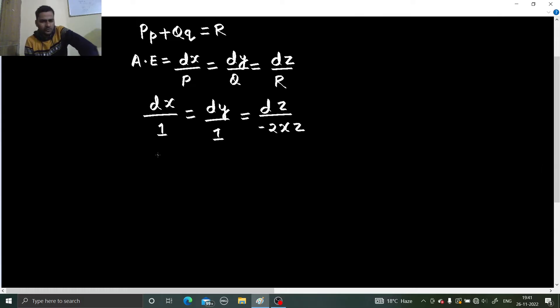You can write this as dz divided by minus 2xz. The first two we can easily group them together. So we get dx equals to dy. Let us integrate them. Integral of dx is nothing but x, integral of dy is y and there we get c1. So you can get easily x minus y equals to c1 and you can also let this as u.